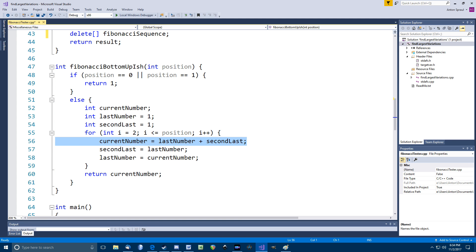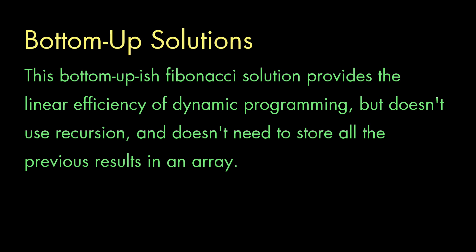So, we can modify the bottom-up dynamic programming solution, so that we only keep track of the last two numbers in the sequence. After computing the latest number in the sequence, and this variable current number, we can copy last number to second last, and then copy current number to last number. So, we sort of slide the new number in, which results in bumping one number off at the other end, and we've always got the last two numbers in these variables. The point is, now we've given ourselves the benefits of the dynamic programming concept, which is linear time efficiency, but we've avoided recursion altogether, and we've avoided needing an array to store intermediate values.